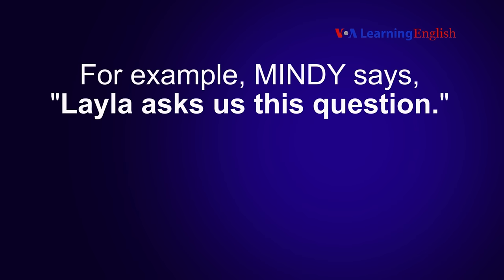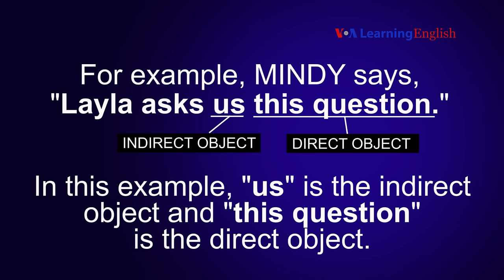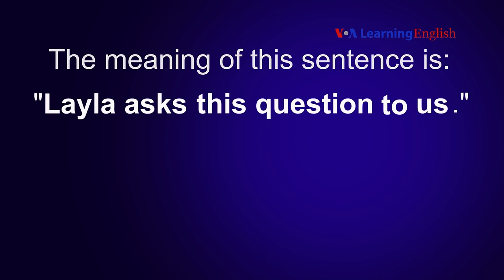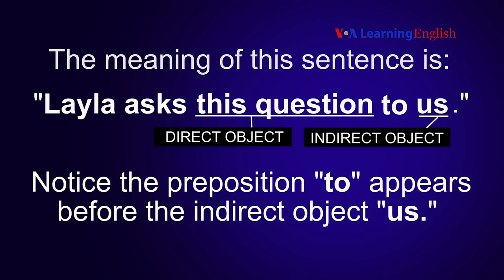The preposition is usually 'to' or 'for.' For example, Mindy says: Layla asks us this question. In this example, 'us' is the indirect object and 'this question' is the direct object. The meaning of this sentence is: Layla asks this question to us. When the indirect object comes after the direct object, we use a preposition, usually 'to' or 'for.' Notice the preposition 'to' appears before the indirect object 'us.'